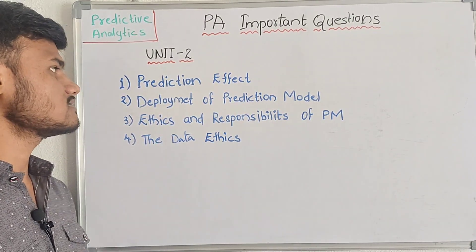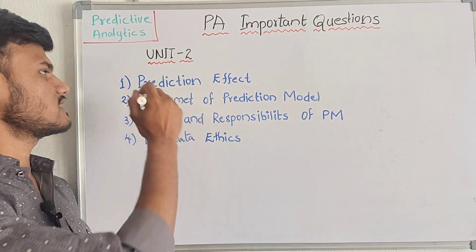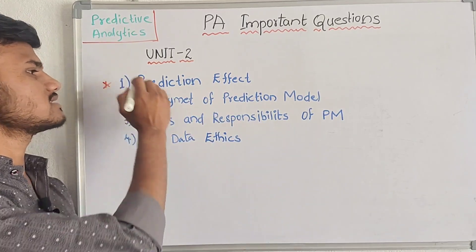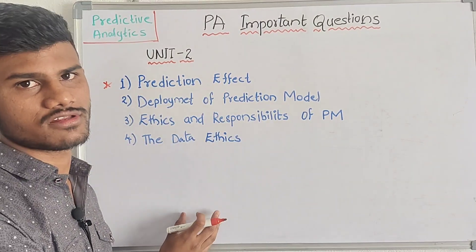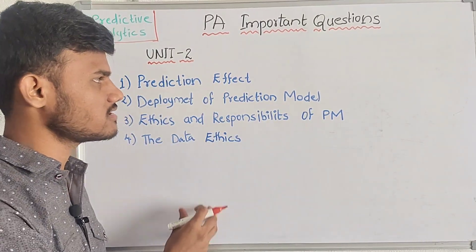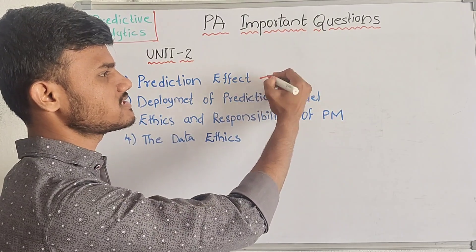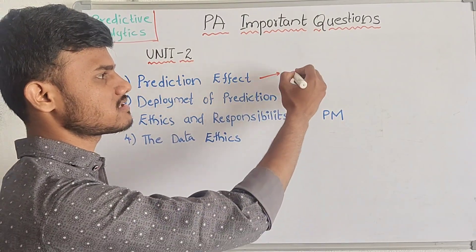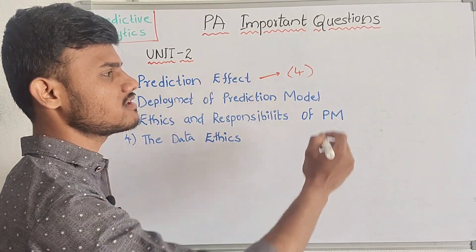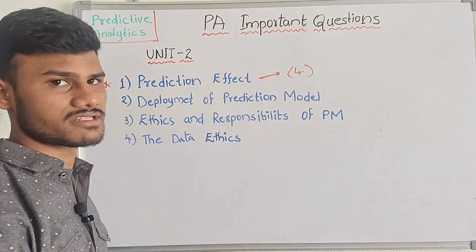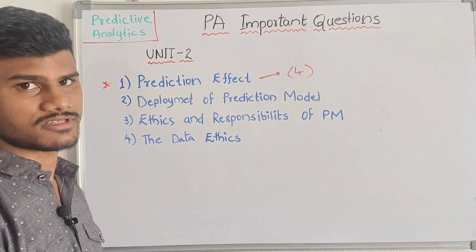First is the prediction effect. This prediction effect is very important because it is the name of this unit. There are four types of effects — you have to explain them well.